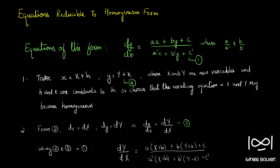Let's call our given equation as equation 1 and our substitution equation as equation 2. Now, from equation 2, if you differentiate both sides with respect to x, we can see that d(small x) equals d(capital X) and d(small y) equals d(capital Y). Or we can say that dy/dx equals dY/dX. So that part doesn't change. Let's call that equation 3.